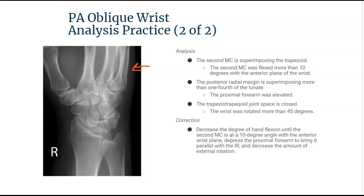Also, the posterior radial margin is superimposing more than one-fourth of the lunate. You can see it's superimposing more than one-fourth of the lunate, which means that the proximal forearm is elevated. We need to decrease the hand flexion, depress that proximal forearm, and decrease that amount of external rotation so that the wrist is in that 45-degree obliquity that we need.